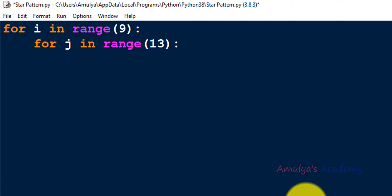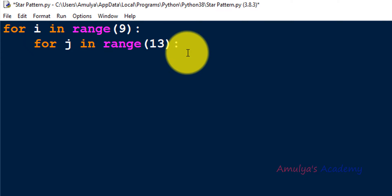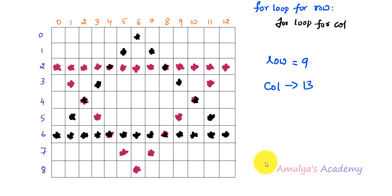Now we are done with the nested for loop. In a row, in some columns we want to print space and in some columns we want to print star. To print these two characters I will use an if-else conditional statement. In the if, I will specify in which row and column I want to print star; in the else part I will print space. I will divide my pattern into different parts to write conditions for each.